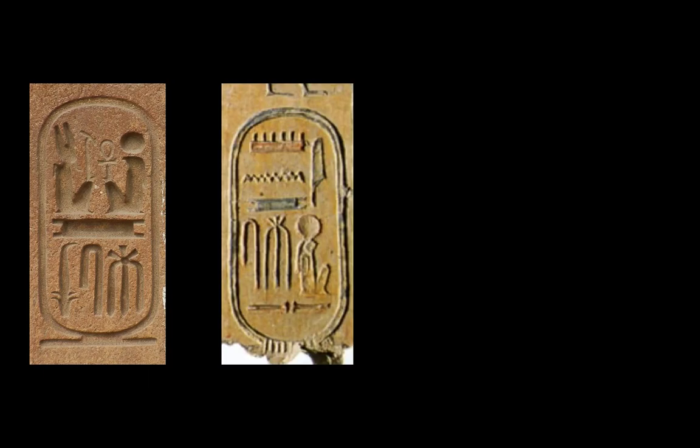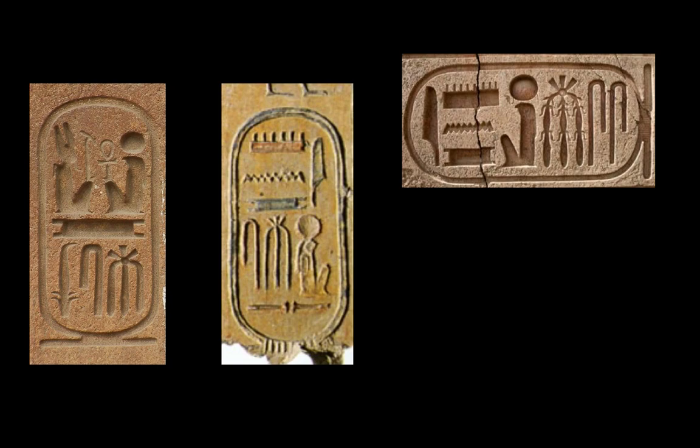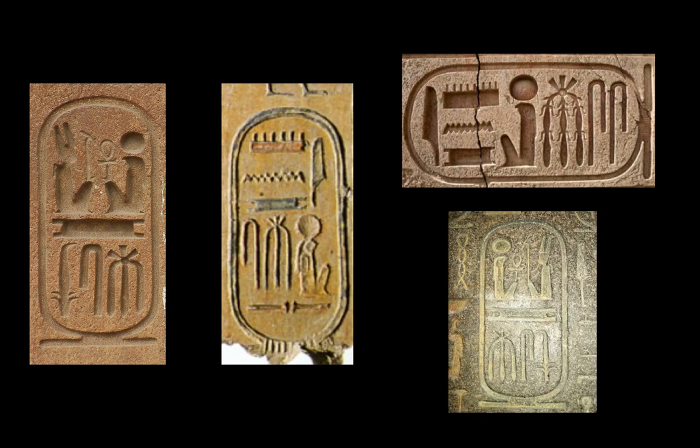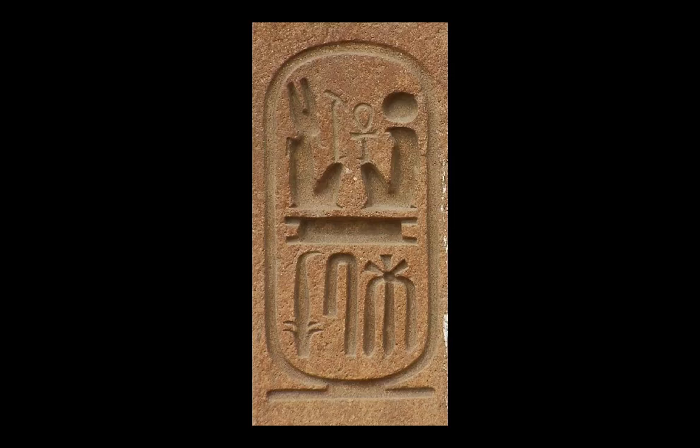Unfortunately, to make things more difficult, the symbols inside a cartouche can be arranged in various different ways. They can be written from right to left or from left to right, and this makes the translation more difficult. Today I will concentrate on this cartouche, which is actually from a temple in Luxor.